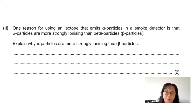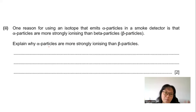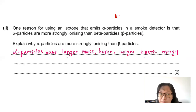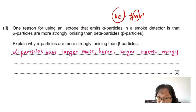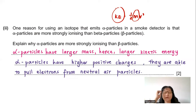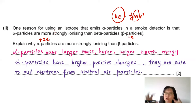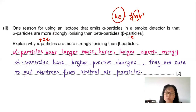Part B2: Explain why alpha particles are more strongly ionizing than beta particles. Alpha particles have a larger mass, giving them larger kinetic energy (KE = ½mv²). They also carry a higher positive charge (+2e) compared to beta particles (−e), allowing them to pull electrons from neutral air particles more effectively, causing greater ionization.